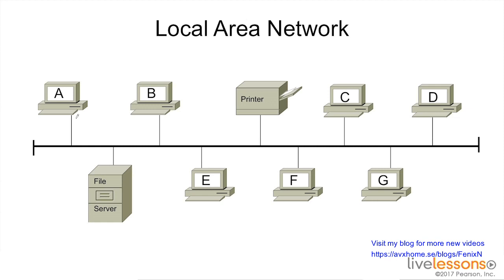For instance, if two devices try to send a packet at the same time, they have the chance to collide. This becomes a source of inefficiency in the network. The second issue we have is something called a broadcast domain. A broadcast domain is a logical division of a computer network in which all nodes can reach each other by broadcast. So if this person needs to try to find somebody and sends out a request, every computer along the way, whether it's meant for them or not, has to process it, which once again leads to a source of inefficiency in the network.